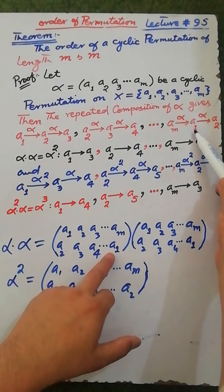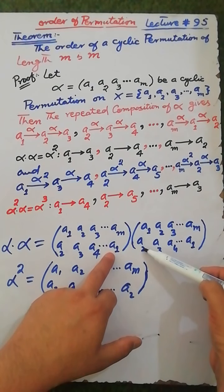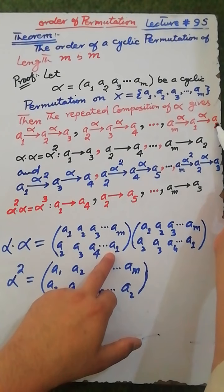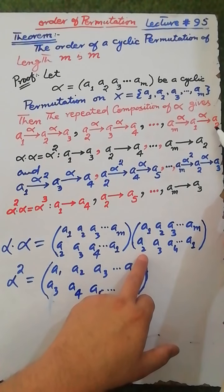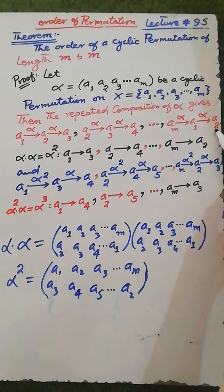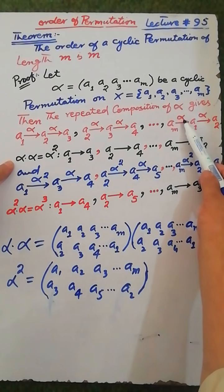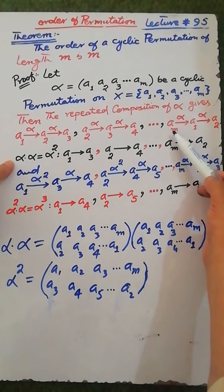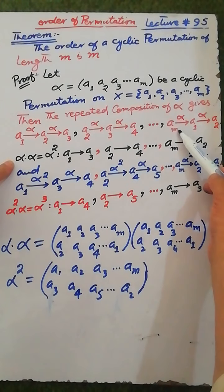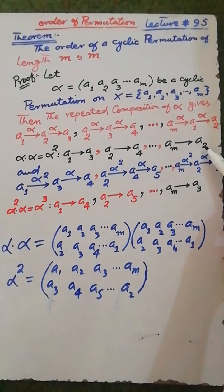Under alpha, am maps to a1, and again under alpha, a1 maps to a2. Therefore under the composition alpha with alpha, am maps to a2. So alpha squared maps am to a2.